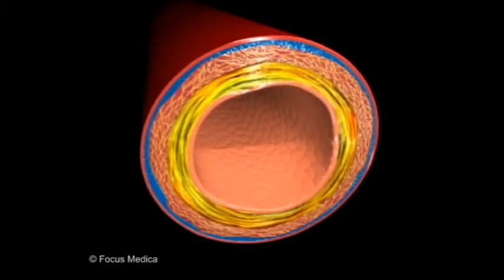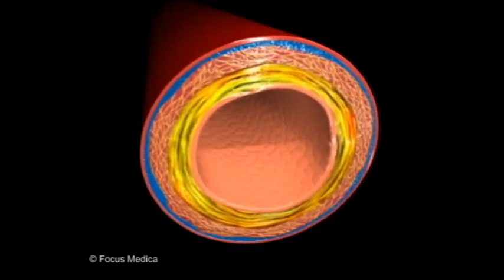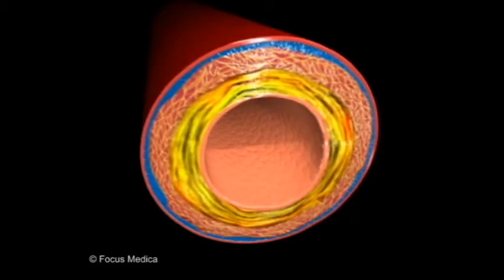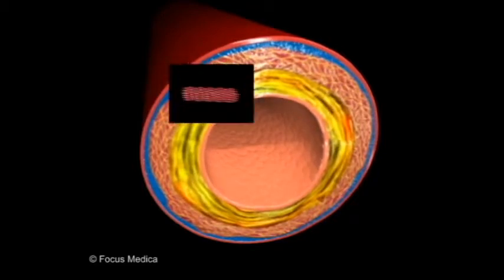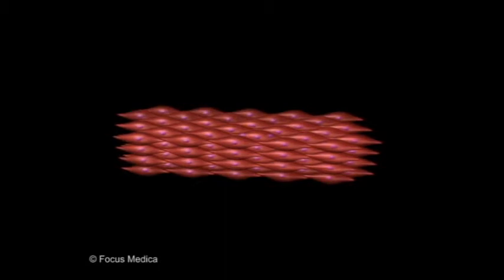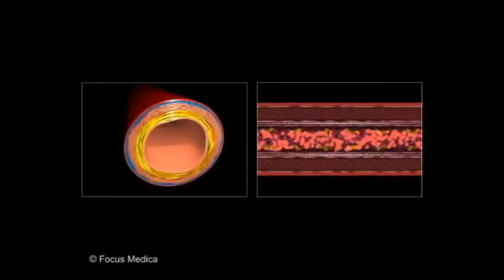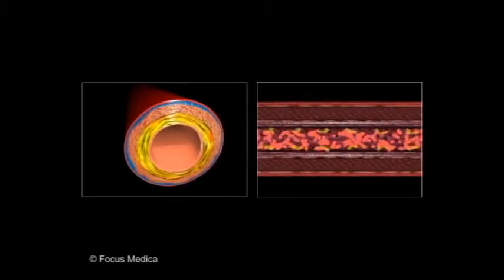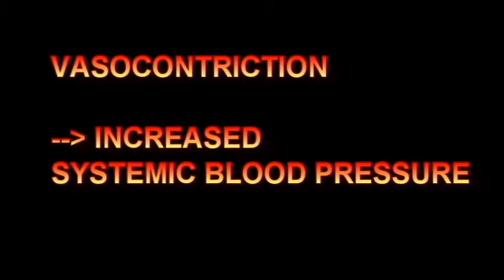Exactly. Remember, too, that the release of angiotensin 2 also causes the systemic arterioles to constrict, which increases the peripheral resistance as the blood flows through the arterioles. This also contributes to the rise in systemic blood pressure.